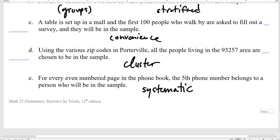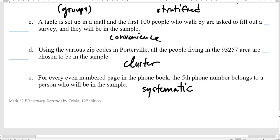For every even-numbered page in the phone book, the fifth phone number belongs to a person who will be in the sample. Every nth person is systematic. I want to talk about the biases. I can't leave this here because when we're talking about these, we need to kind of go through some of the biases.